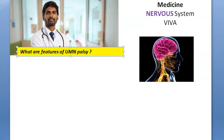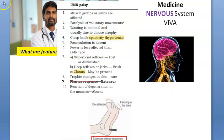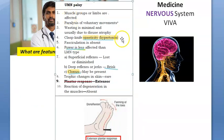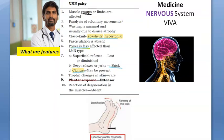What are features of UMN Palsy? In upper motor neuron palsy, the lesion will be in the pyramidal part — pyramidal cells and their axons — up to the cranial nerve nuclei or anterior horn cells. This involves the corticobulbar, corticonuclear, or corticospinal tracts. Groups of voluntary muscles are affected.